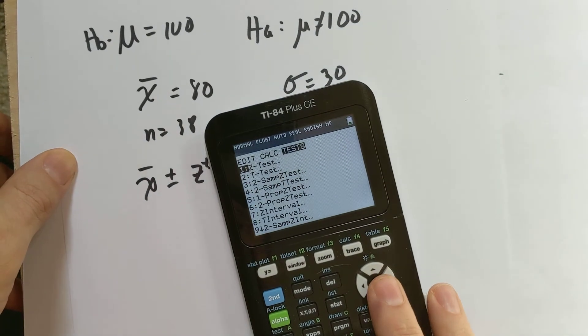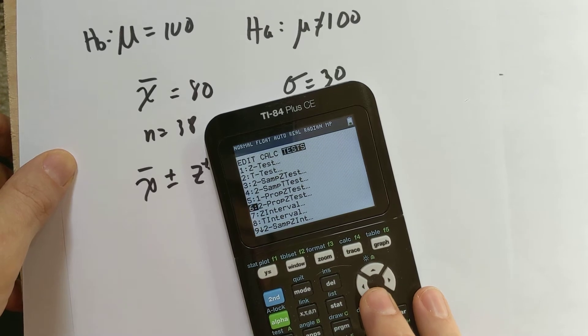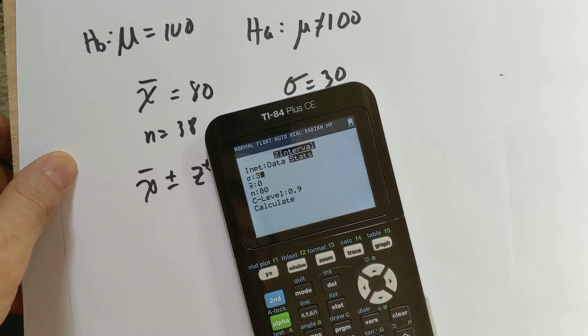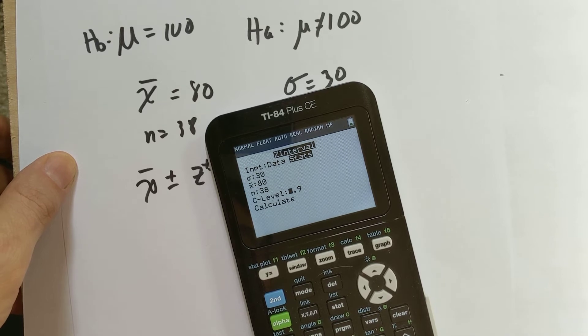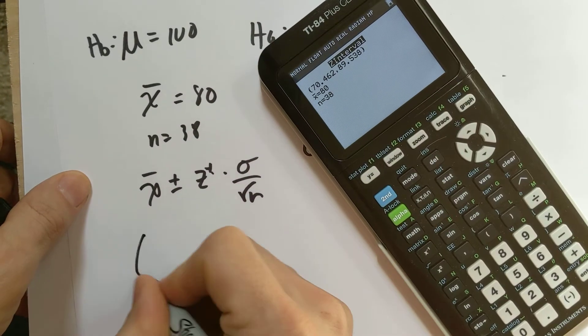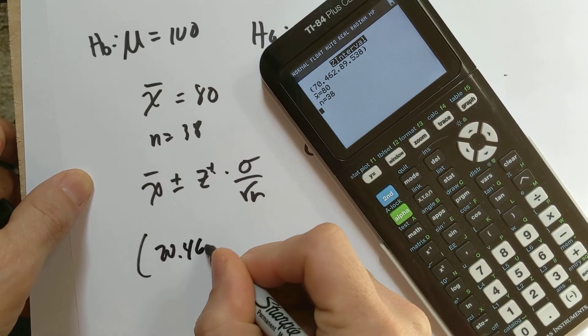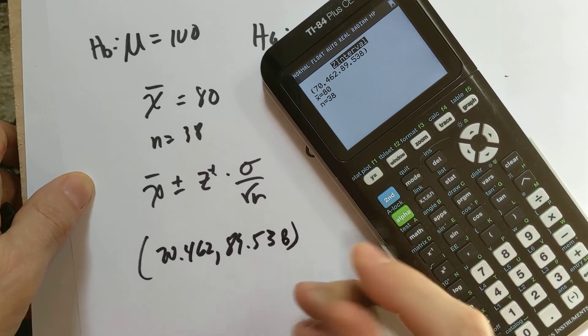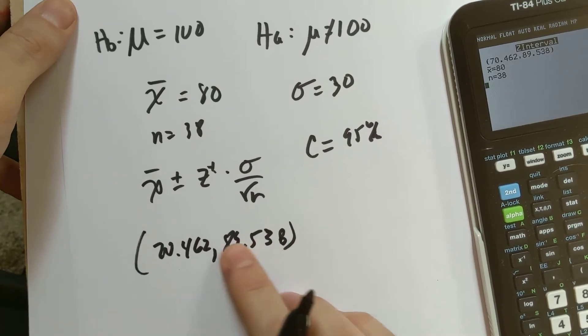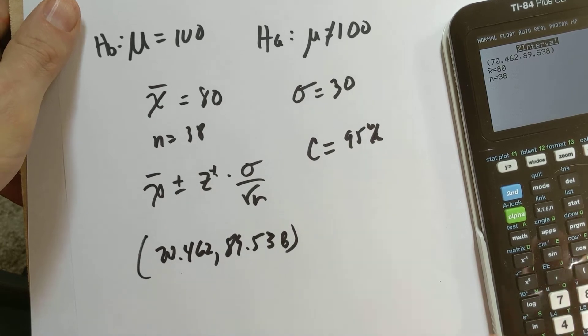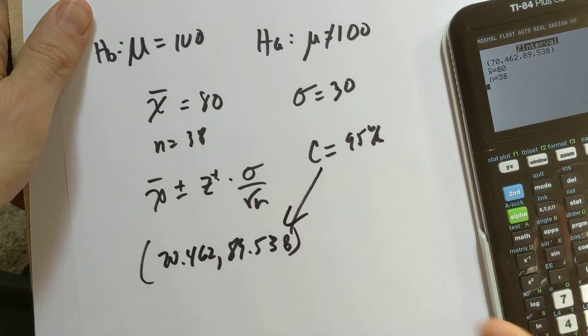If I was to make this confidence interval, I'll just do it quickly on the calculator. I'll go to a z interval because I knew the population standard deviation. The population standard deviation was 30, the sample mean was 80, our sample size was 38, and we do 95% confidence. We got a confidence interval that goes from 70.462 to 89.538. This absolutely is significant evidence that would cause us to reject that hypothesis because 100 is nowhere near this interval. We would reject in terms of a 95% confidence interval.